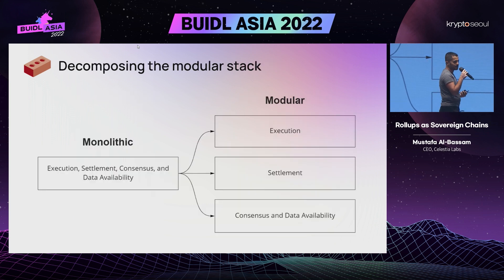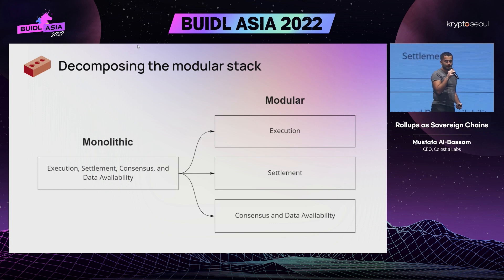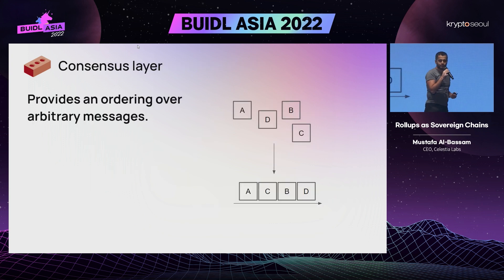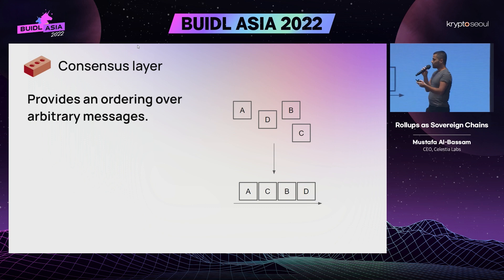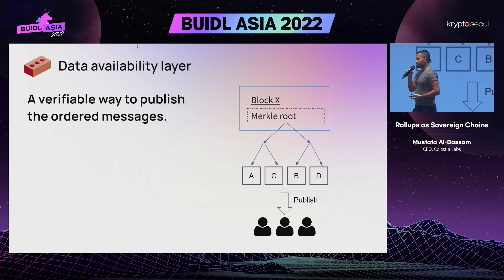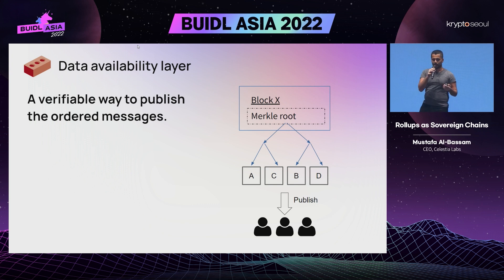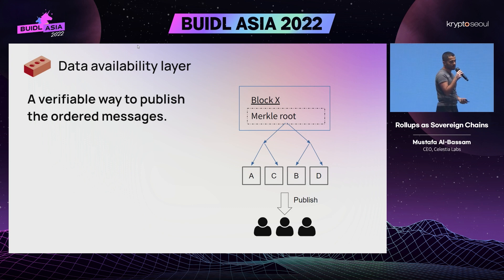In this modular stack, there are four main components. There's consensus, which is at the bottom of the stack, and consensus basically takes in a bunch of arbitrary messages and then provides an order for those messages. Then you've got data availability, which guarantees that the messages that have an ordering are actually known by all the participants in the network and have actually been published to the network, so that people can know what the actual transactions in the chain are.